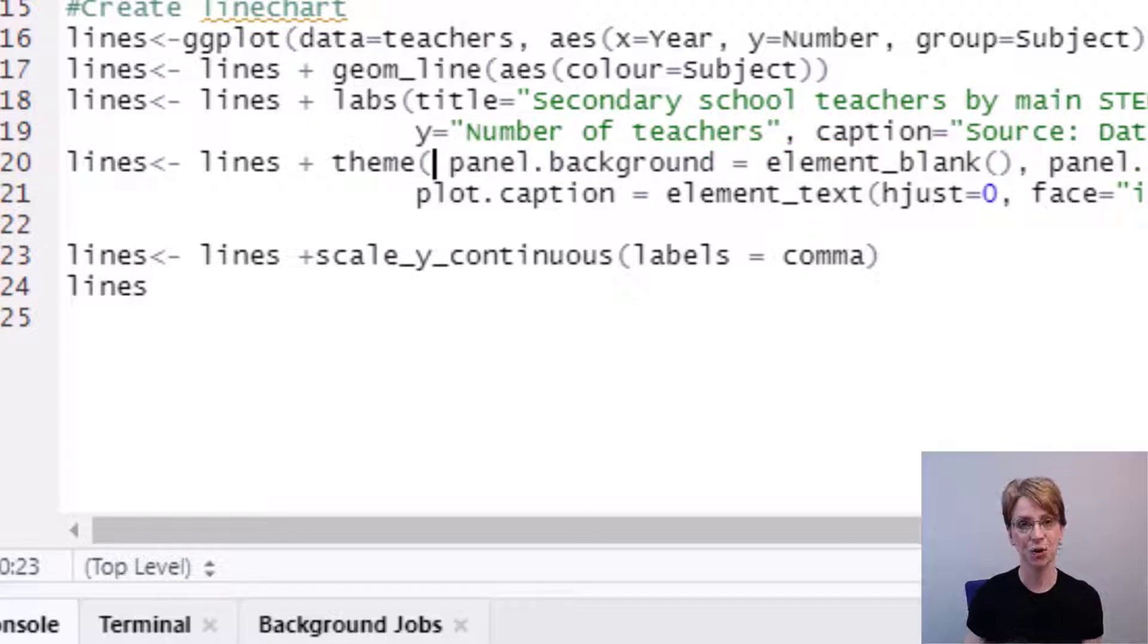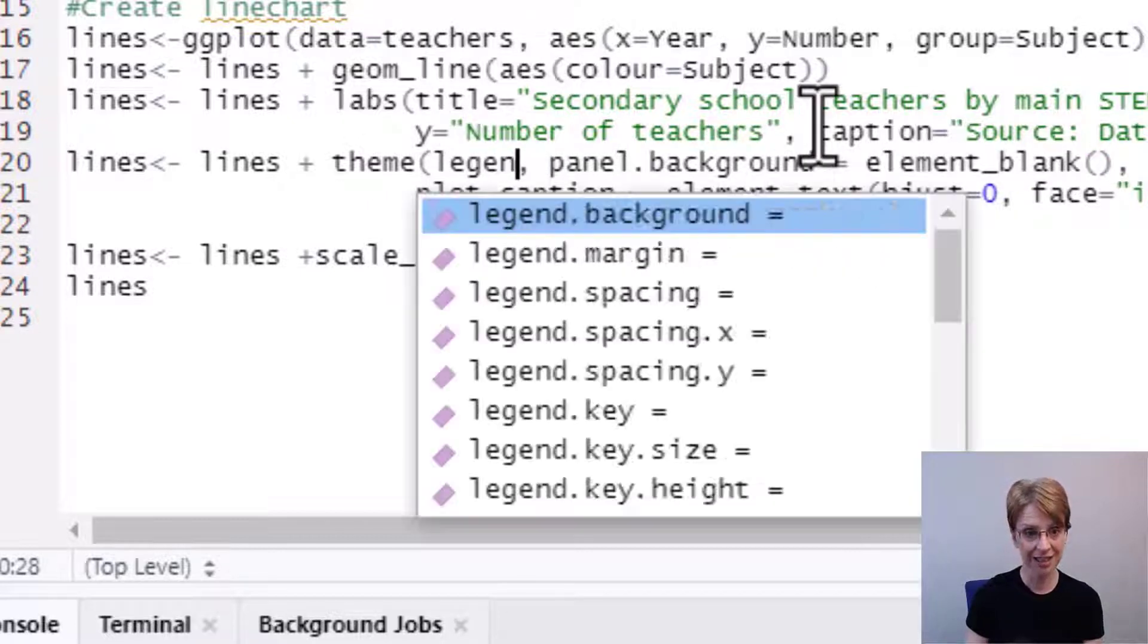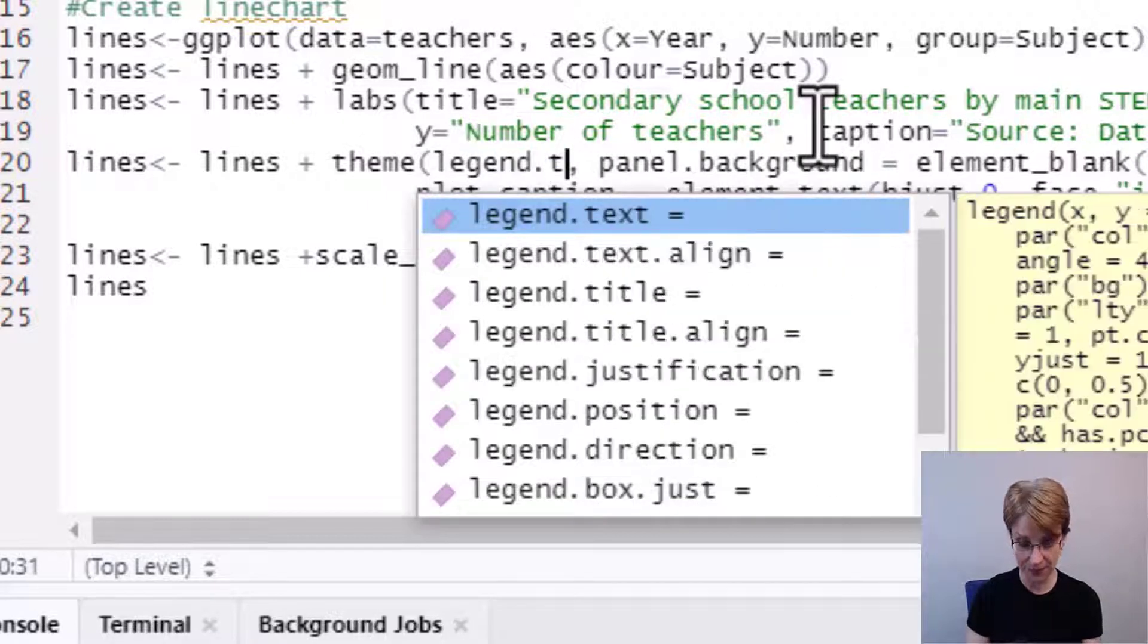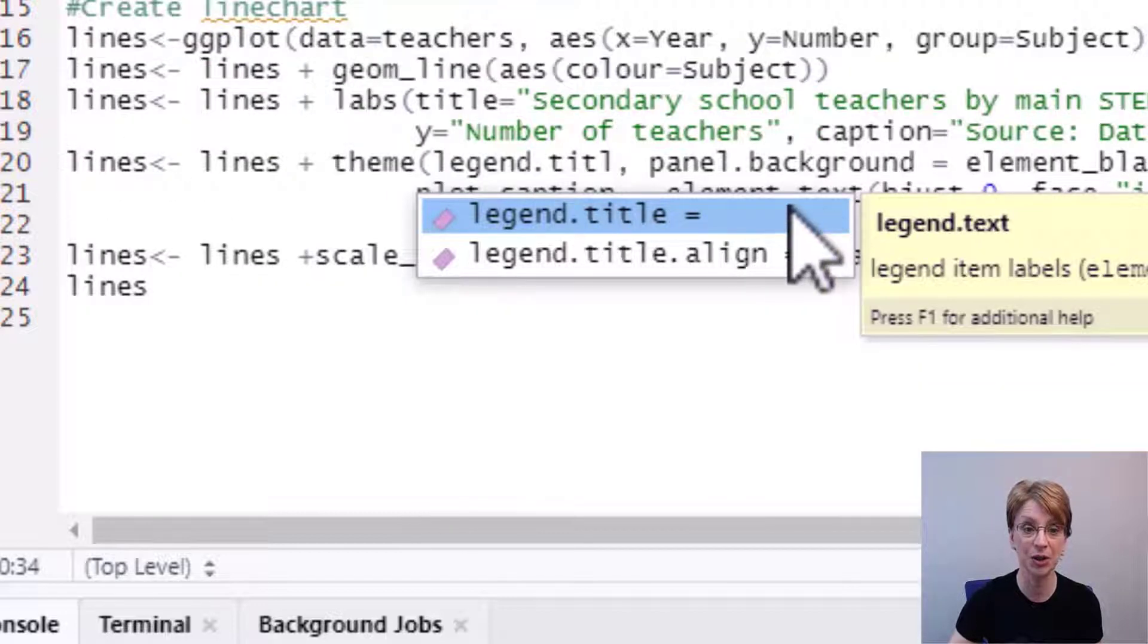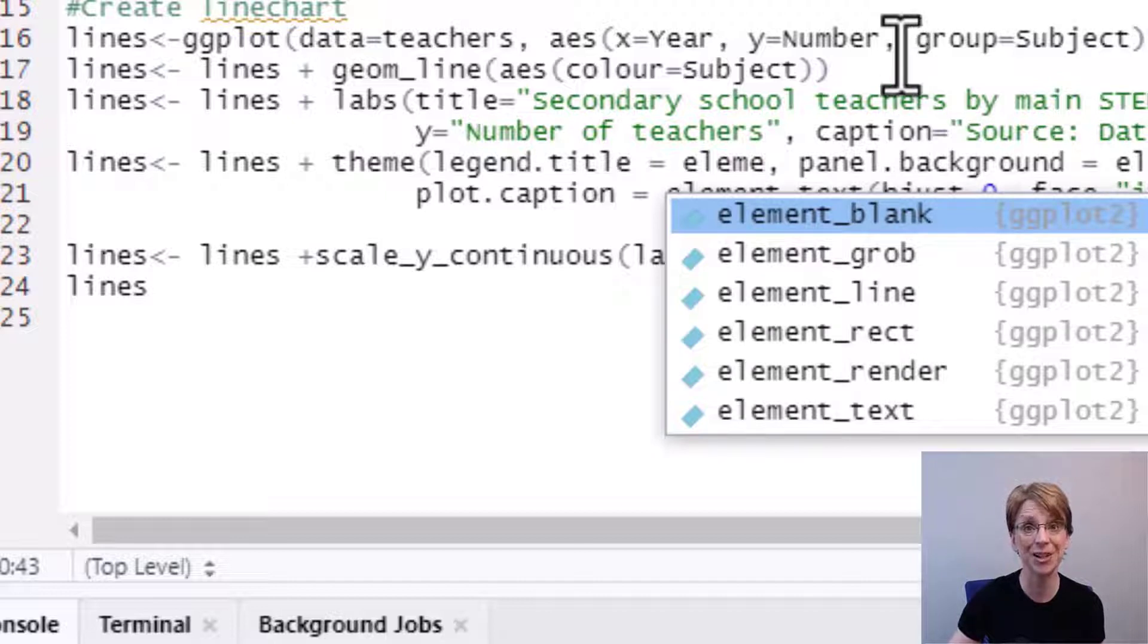The next thing I want to show you is how to remove the title from the legend so at the moment the title is subject but you may not want the word subject to appear so to do that all I need to do is type in legend.title equals and then type in element_blank.